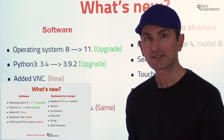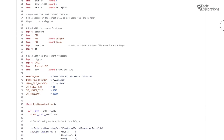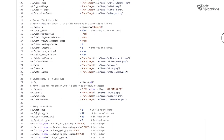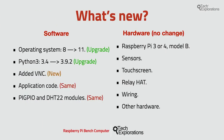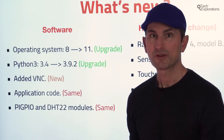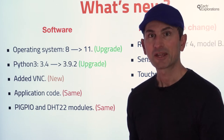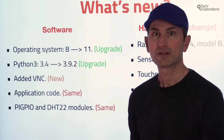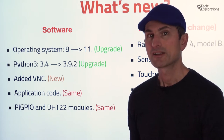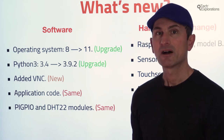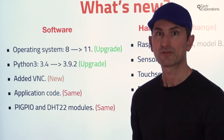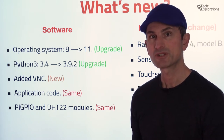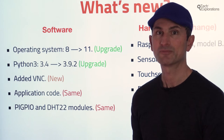On the software side, the bench computer Python code also remains unchanged. The most significant change is the operating system — from the original Raspberry Pi OS Jessie, the application now runs on Bullseye. As for the Python interpreter, I've opted to use the standard version of Python 3 that comes with Bullseye, which is Python 3.9.2.